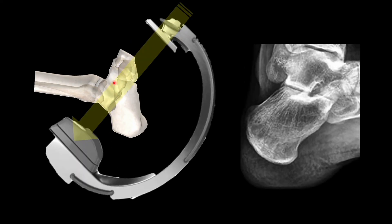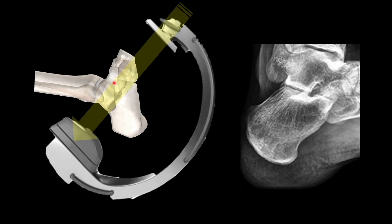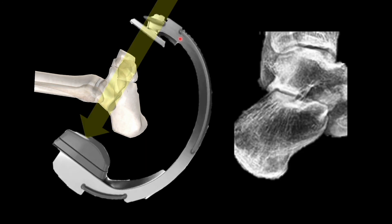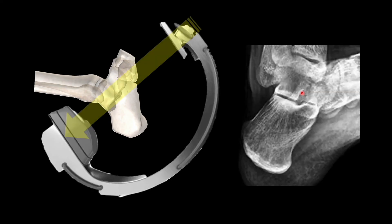By tilting the fluoroscopic beam in different directions with the limb in 40 degrees of internal rotation we get the Broden views. At 10 degrees of tilt we see the top part of the posterior facet lying congruently with the undersurface of the talus. At 20 degrees we get a view representing the mid-superior part of the posterior facet. At 30 degrees we get a view representing the mid-lower part. And at 40 degrees we get a view representing the lowest part of the posterior facet.